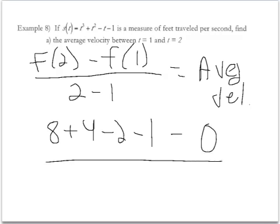All over 1, now we're just going to do this arithmetic. Let's see, 8 plus 4 is 12, minus 2 is 10, minus 1 is 9, so it's 9 feet per second.